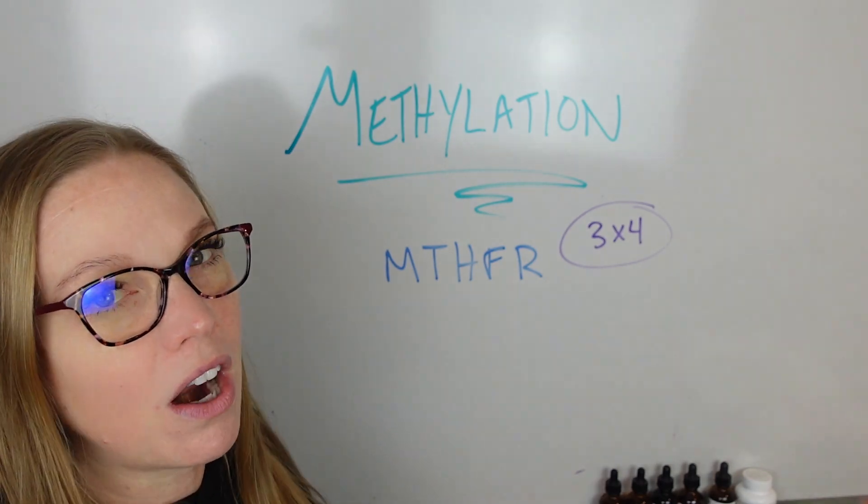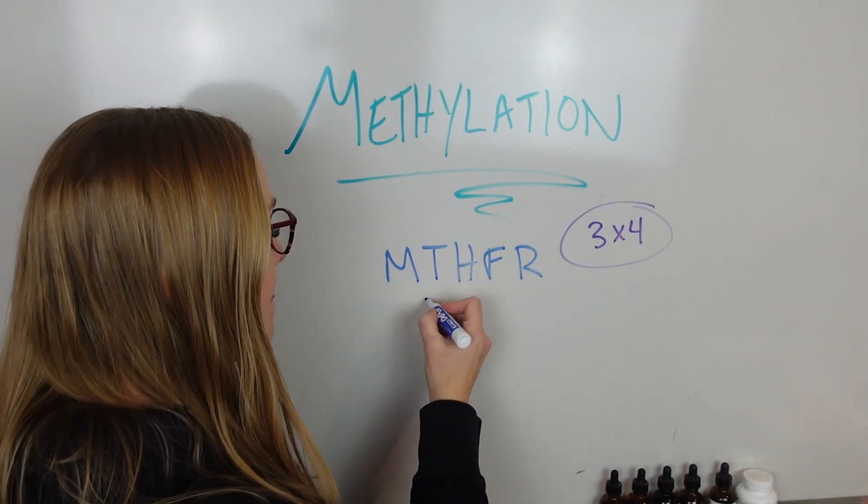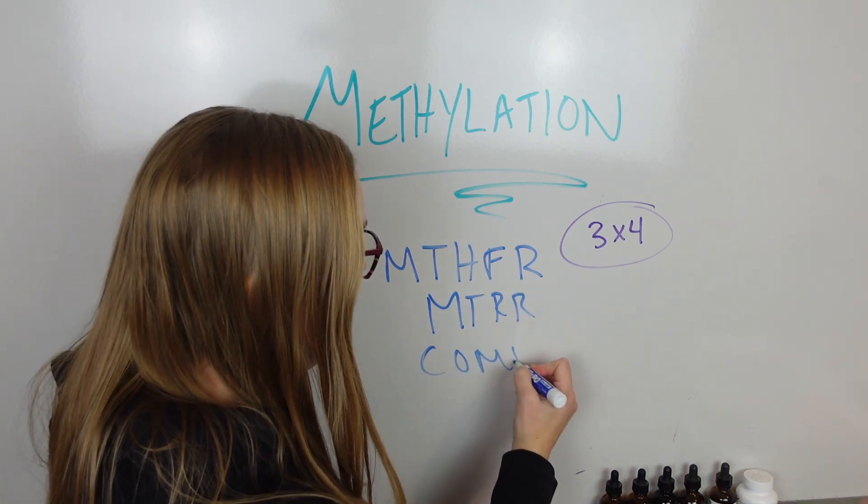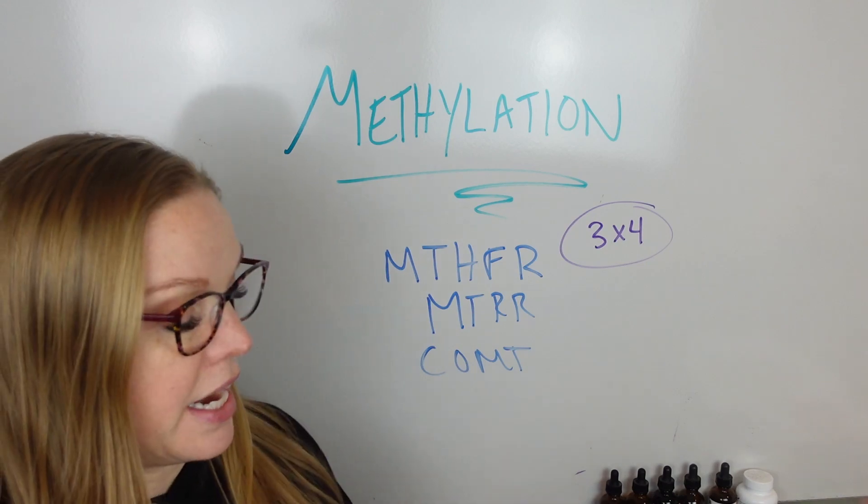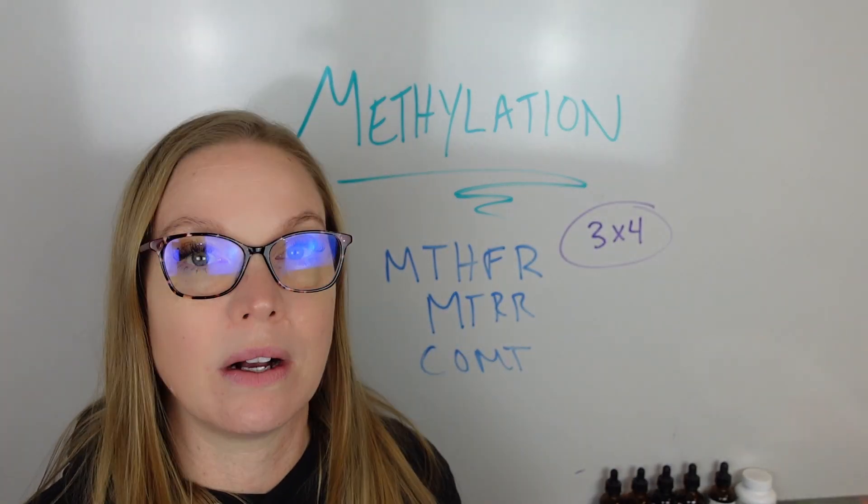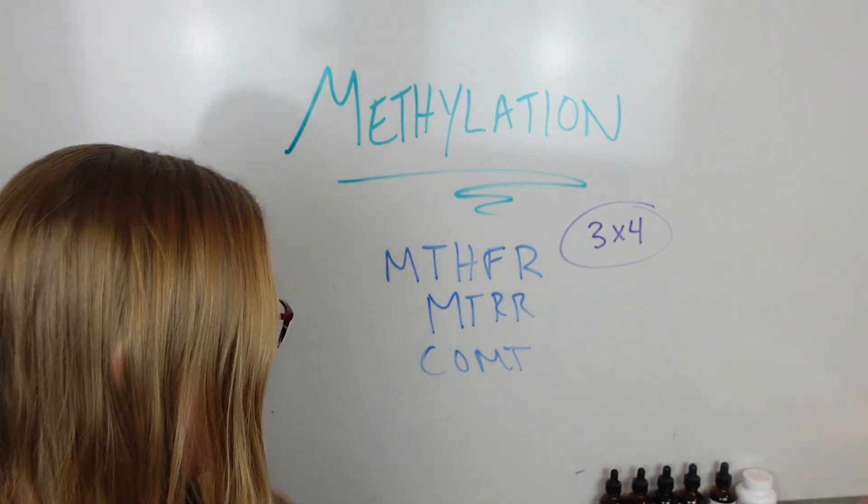But finding out if you have this SNP is helpful. This is not the only one. There are other ones. M-T-R-R and then C-O-M-T. These are other genetic SNPs you can have that actually impact your body's ability to methylate well. So genetic testing is one thing that we can look at.